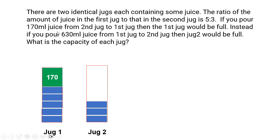But instead if you pour 630 ml juice from the first jug to the second jug then jug 2 would be full. So now what is the capacity of each jug?